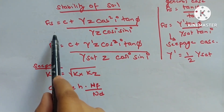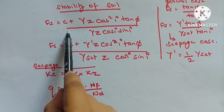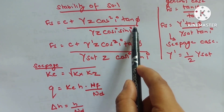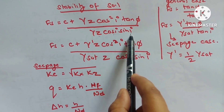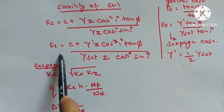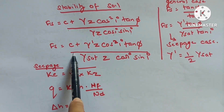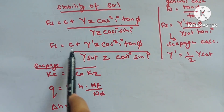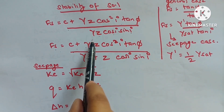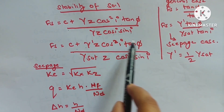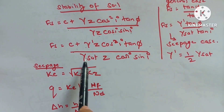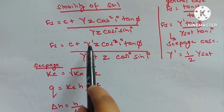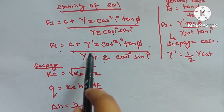Stability of soil slope: FOS = (C + γZ·cos²i·tan φ)/(γZ·cos i·sin i). For submerged case: FOS = (C + γ'Z·cos²i·tan φ)/(γsat·Z·cos i·sin i).